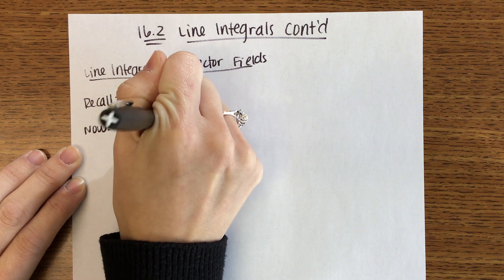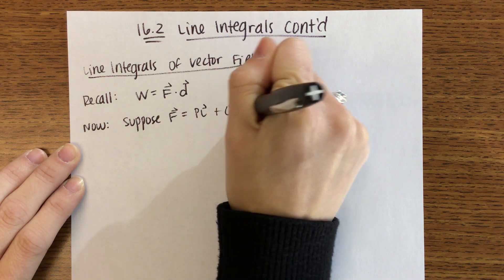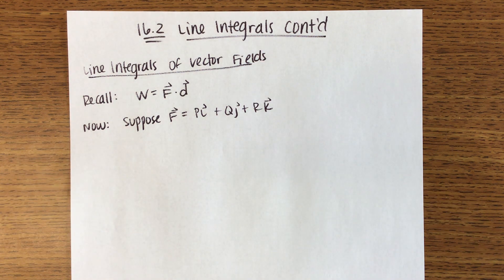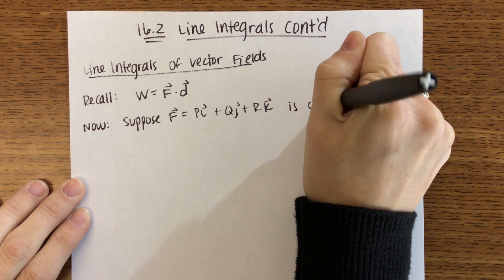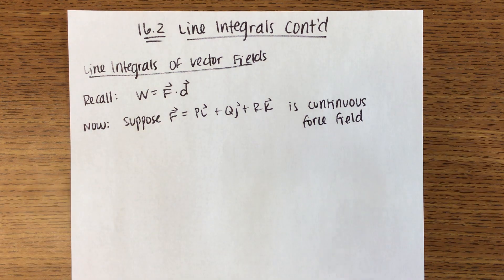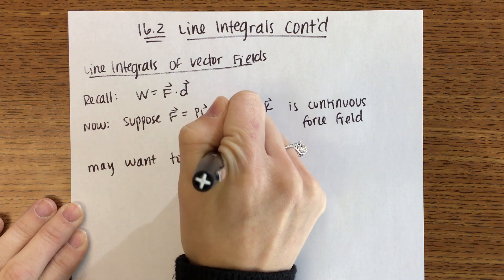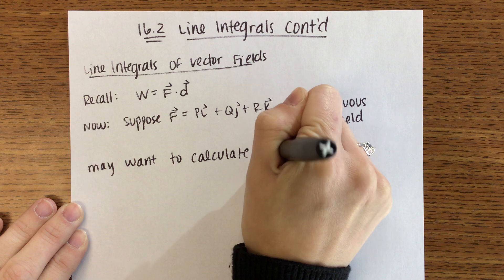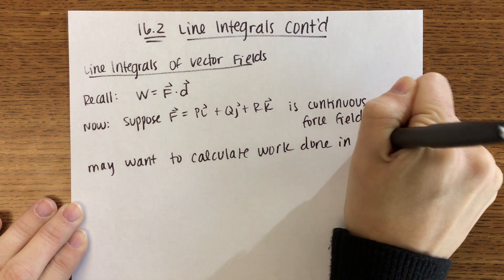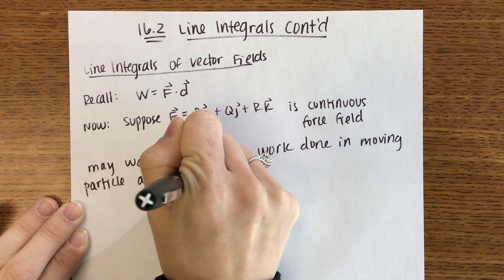Suppose that you have some vector field defined by P times I plus Q times J, add R times K. P, Q, R — those are all functions, not constants. And let's say that this is a continuous force field. It could be a gravitational force field, it could be an electric force field. We may want to calculate the work done in moving some particle along a smooth curve C.